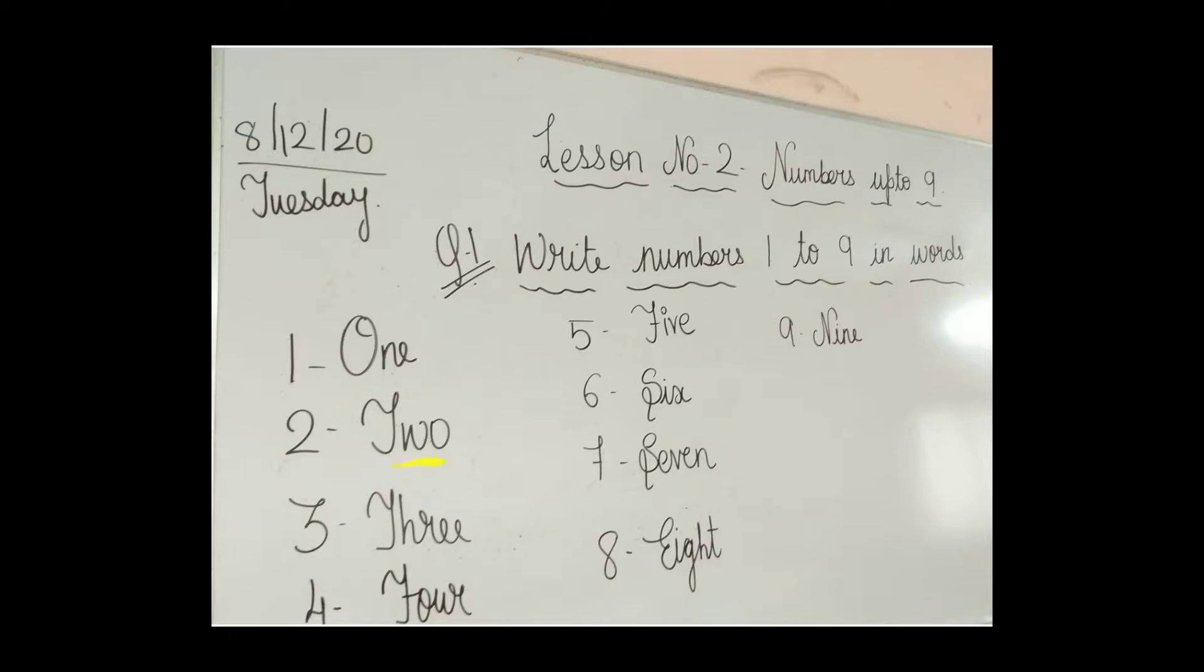Lesson number 2, numbers up to 9. Write numbers 1 to 9 in words. ONE 1, TWO 2, THREE 3, FOUR 4, FIVE 5, SIX 6, SEVEN 7, EIGHT 8, NINE 9. For your convenience I have written on the board also. Like this you have to copy this in the notebook.